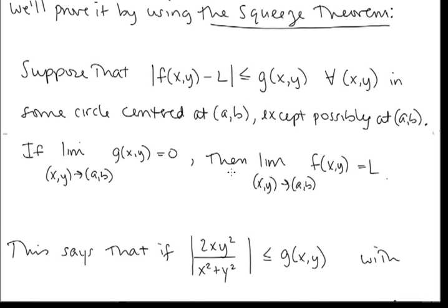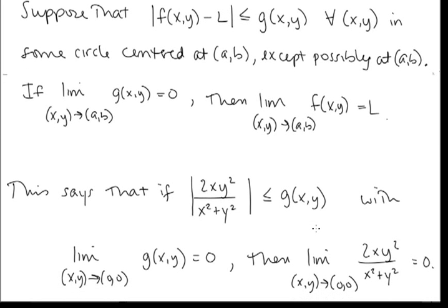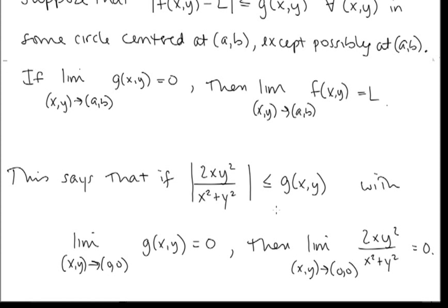Our function is f(x, y) = 2xy² / (x² + y²) and our limit L = 0. The squeeze theorem says if we can show |f(x, y)| ≤ g(x, y) for some function whose limit as (x, y) → (0, 0) is zero, then our limit is also zero. The key is to find a continuous g(x, y) — like a polynomial or composition — so we can find the limit just by plugging in.